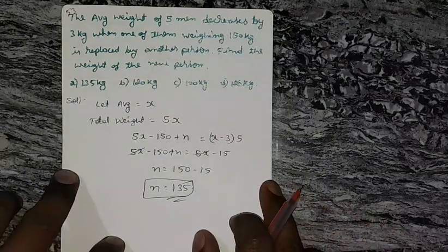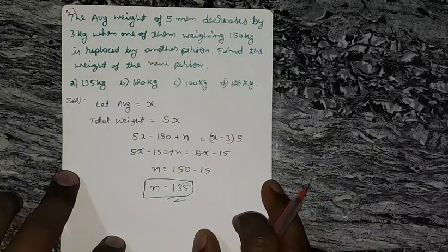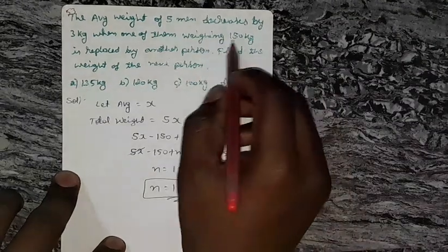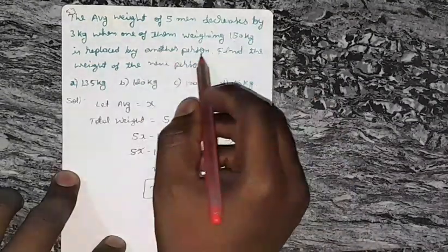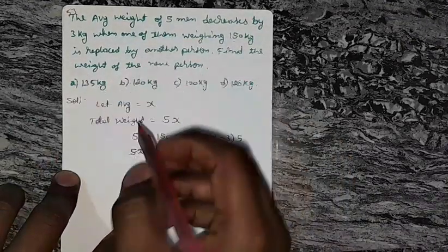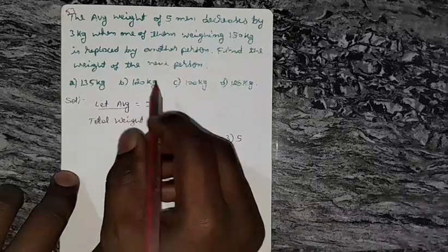Question number 53: The average weight of five men decreases by 3 kg when one of them weighing 150 kg is replaced by another person. Find the weight of the new person. Let the average weight of these persons be x.